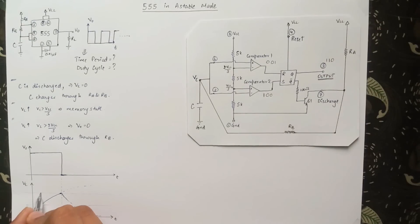Looking at our analysis, we see that the capacitor charges through RA and RB. Therefore, the charging time constant is C times RA plus RB, whereas it discharges through only RB. Therefore, the discharging time constant is C times RB.